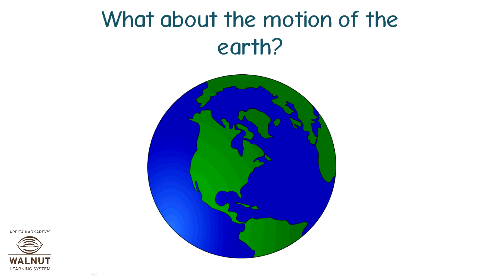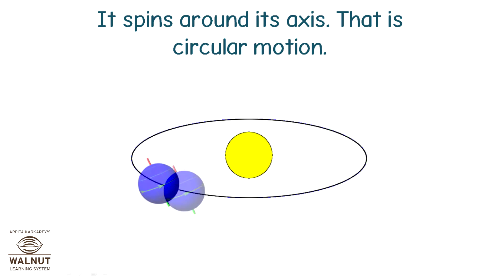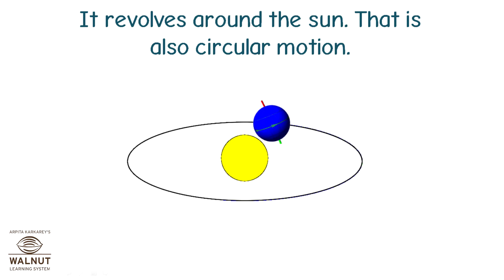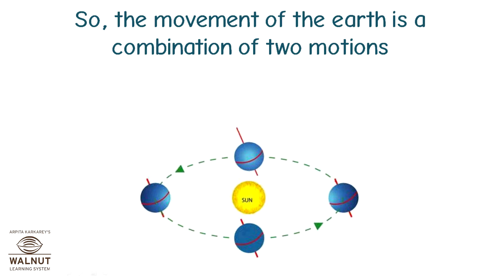What about the motion of the earth? It spins around its axis, i.e. circular motion. It revolves around the sun, i.e. circular motion. So, the movement of the earth is a combination of two motions — circular and circular.